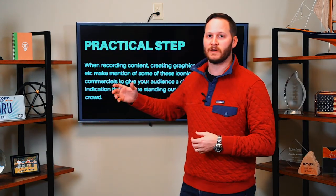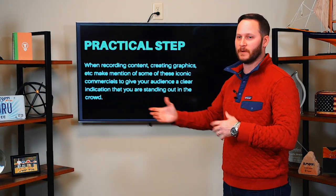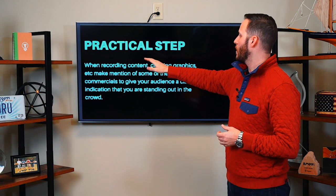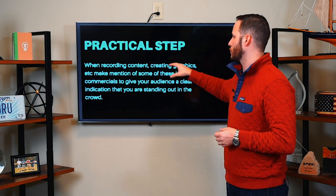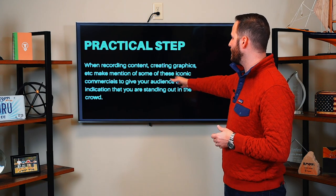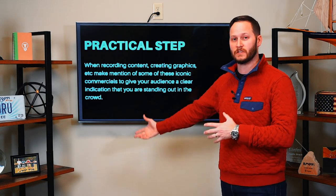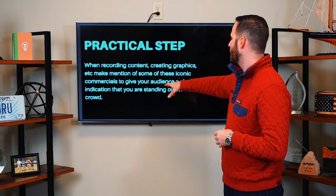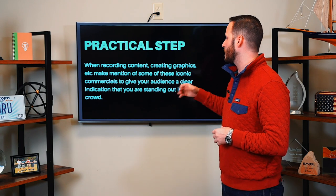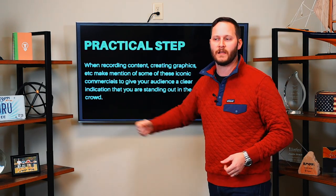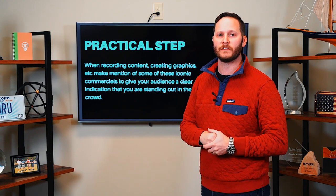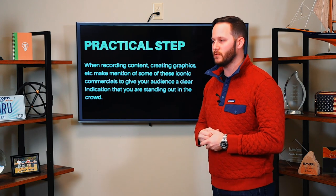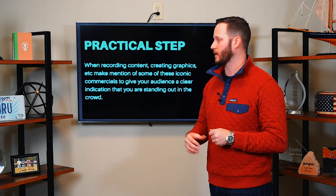Practical step number one: when you're recording content, creating graphics, mailers, etc., make mention of those iconic commercials — Joe Namath, Danny Glover, these different celebrities — to give your audience a clear indication that you're standing out in the crowd. That you are a local resource. If they want to know about those plans but are too afraid to call an 1-800 number, they can come to you or call you locally. That's the Brock and Mortar concept.